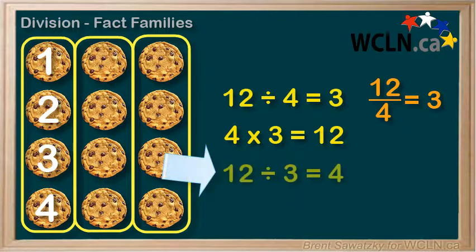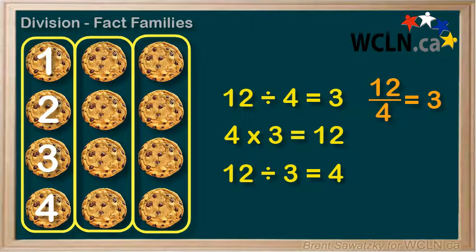And we can state it like this. 12 divided by 3 equals 4. Again, another way of writing 12 divided by 3 is 12 over 3, with the line in between.